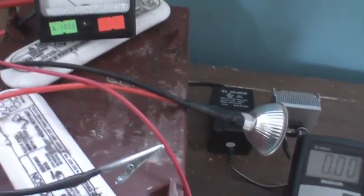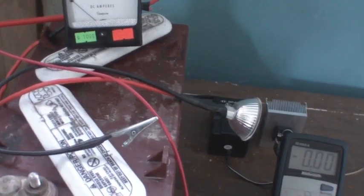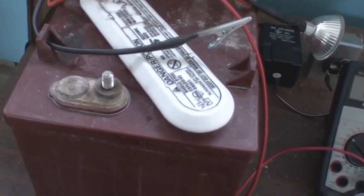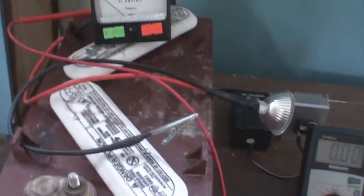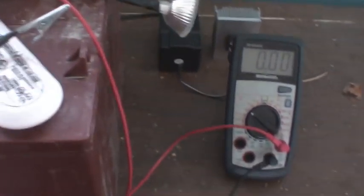Anyway, so it's a Trojan T1275, 12 volt, and I think they're about 125 or maybe even 150 amp hour.